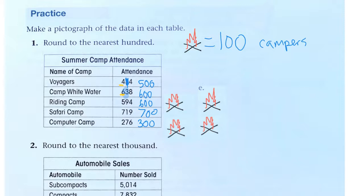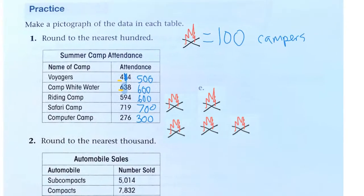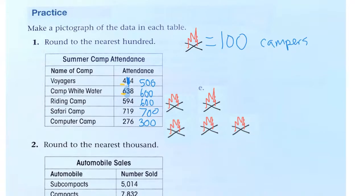So if each fire represents 100 campers, then we can make our symbols. All right, so we've got three symbols for computer camp. I'll need seven for safari camp. What have we got so far? One, two, three, four, five,